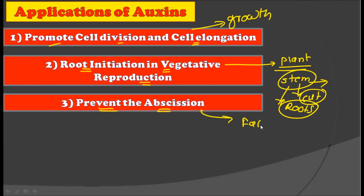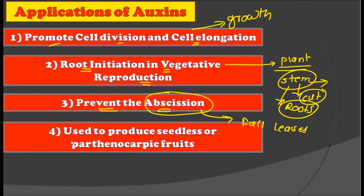The third application of auxin is that it prevents abscission — the fall of leaves, flowers, or fruits from the plant — by inhibiting the hydrolytic enzymes in the abscission layer. The next application is that auxins are used to produce seedless or parthenocarpic fruits; treatment with synthetic auxins makes these fruits seedless.